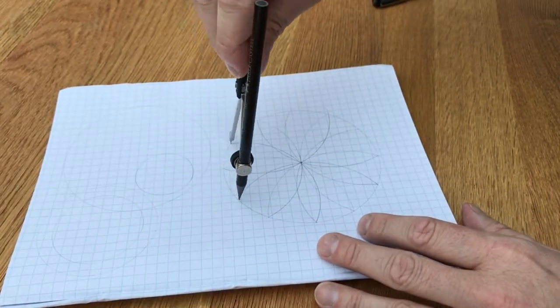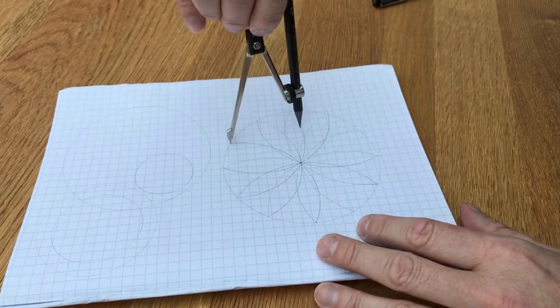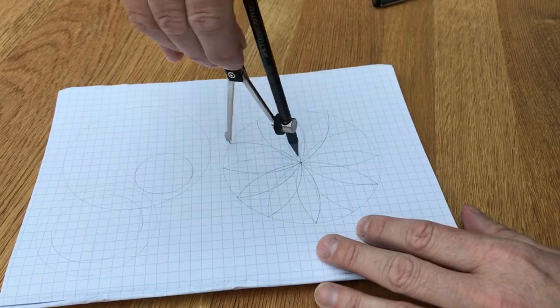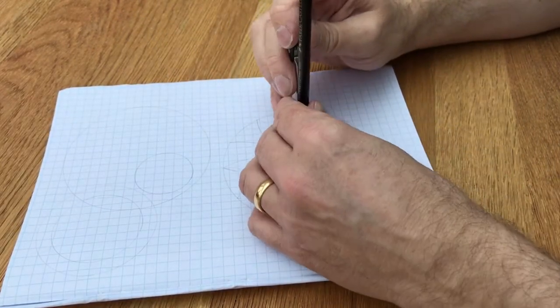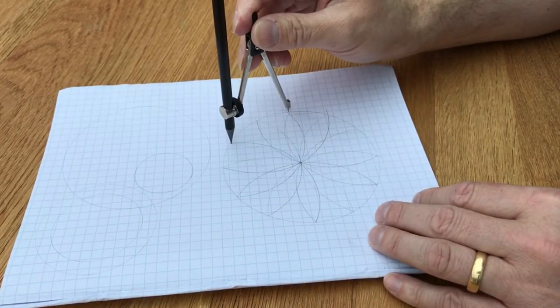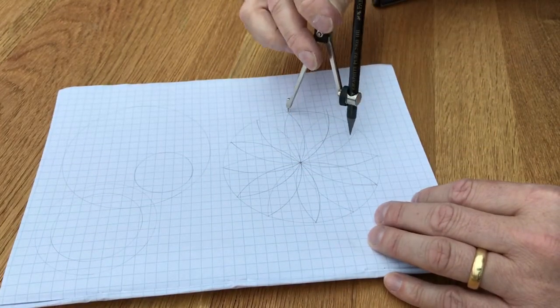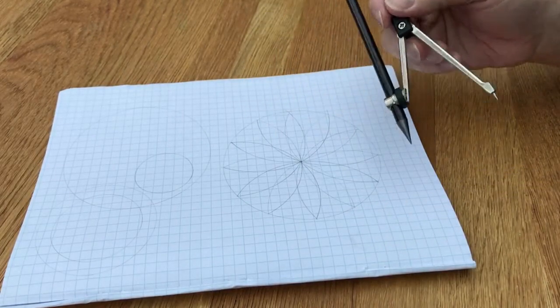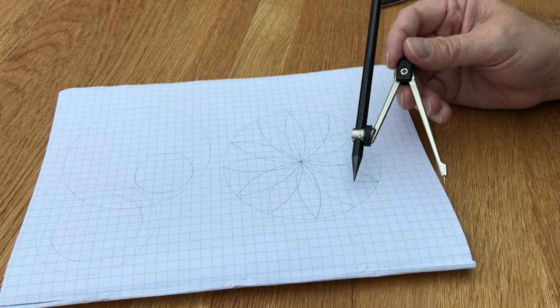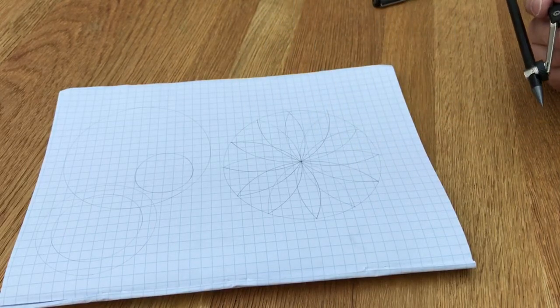This is a very old pair of compasses and the point is not very sharp and it's causing me a few problems here. But I'm sure you'll have a nice new pair of compasses that will do you well. There you go, so there's a 12 pointed flower with lots of places for you to color in.